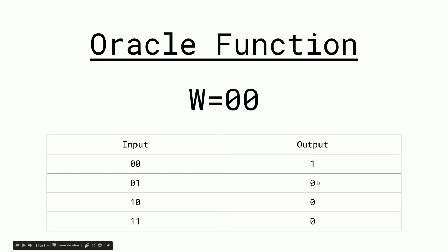For example, if we were to be looking for w equals 00, the oracle function would output 1 for 00, and 0 for every other value. By using the amplitude and by multiplying at the amplitude that this oracle function creates, we're able to output what the correct w we're looking for is.